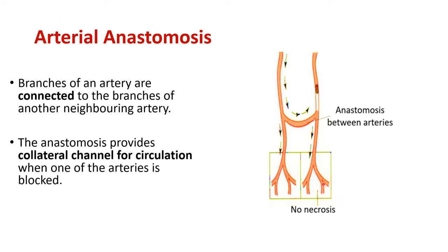If there is an anastomosis — a connection between the branches of this artery and the branches of the neighboring artery — there will be collateral circulation. The channel where the anastomosis exists is known as the collateral channel. Blood from this artery will flow through this collateral channel and supply the affected part of the body as well, allowing it to survive. This is the importance of anastomosis.